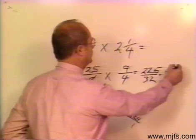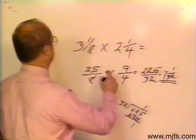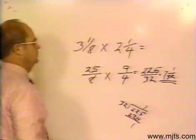I would have 7 and 1/32nd for an answer if I would multiply these two together.